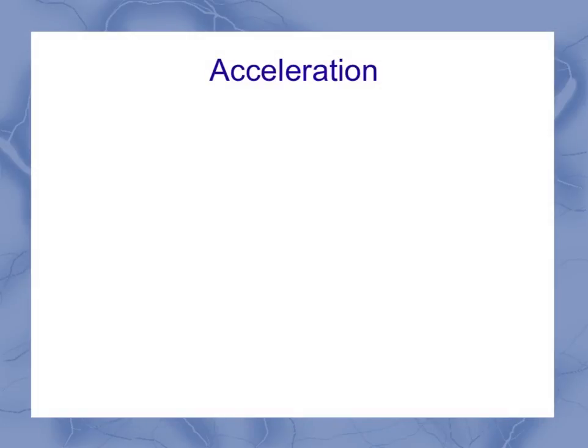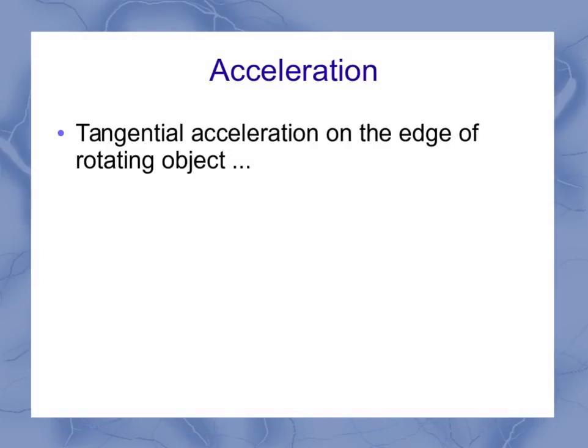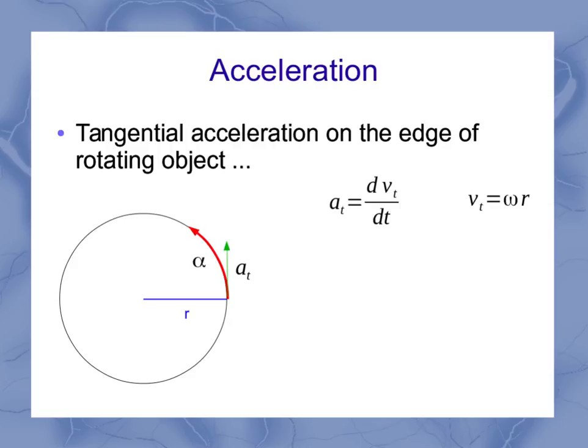I can do the same sort of thing with acceleration. Again, talking about the tangential acceleration on the edge of a rotating object. The acceleration is the time derivative of the velocity. I just found the velocity in the last slide. And that means I have d omega dt times r, because again, r is not changing. And that means I've got the tangential acceleration is equal to the angular acceleration, alpha, times the radius.